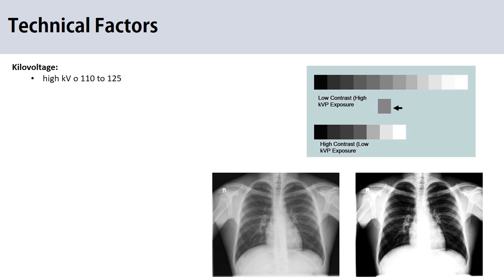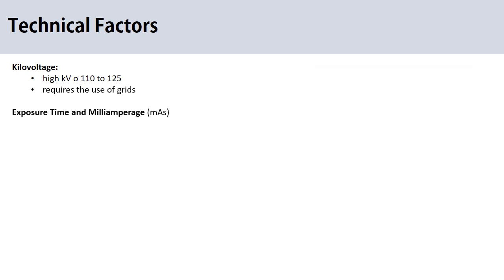An exception is mobile chest projections, where the image receptor is without grids, but this is not recommended — only in conditions where the patient is completely on bed rest in the hospital and a portable chest x-ray is needed. Generally, chest x-ray requires the use of high milliampere and a short exposure time to minimize the chance of motion artifact. We cannot give an exact number for milliampere-seconds as it totally depends on the imaging system being used.